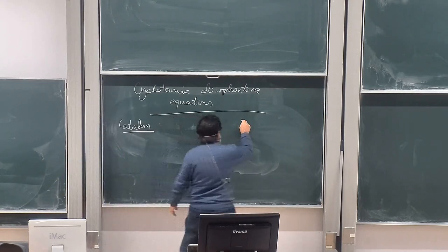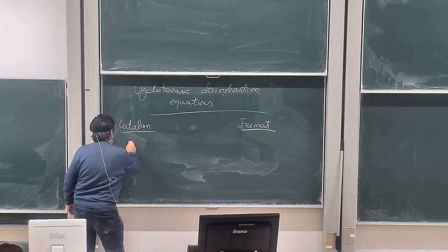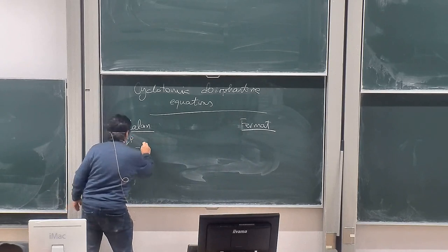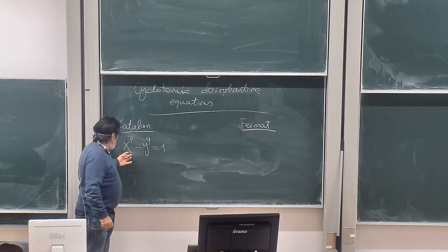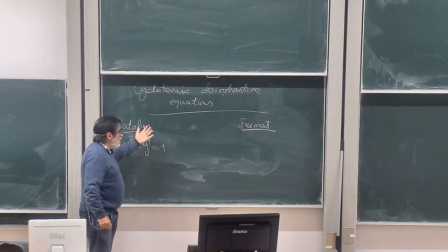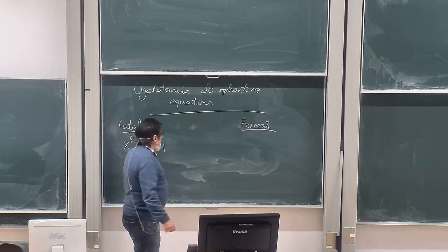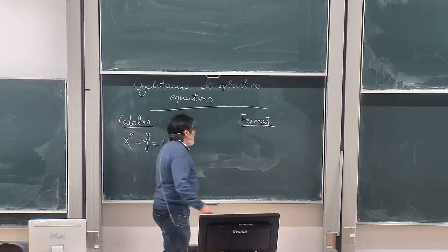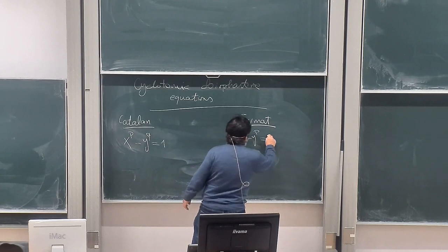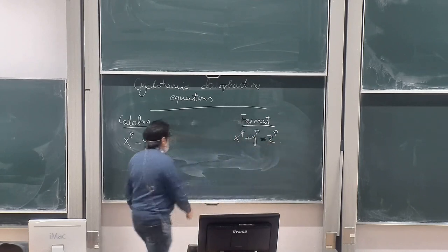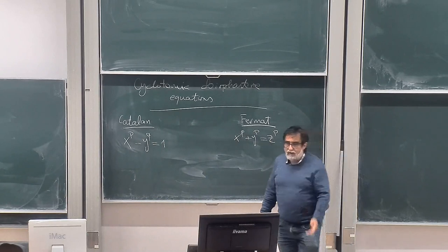...the equations of Catalan, which goes like x to the p minus y to the q equals one, with x and y integers and p and q exponents larger than one, integral. It is easy to understand that one can actually consider only the case when they are prime. And in the same vein, the equation of Fermat is x to the p plus y to the p plus z to the p.